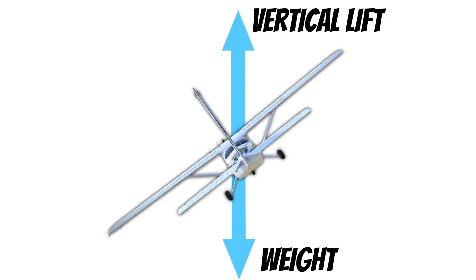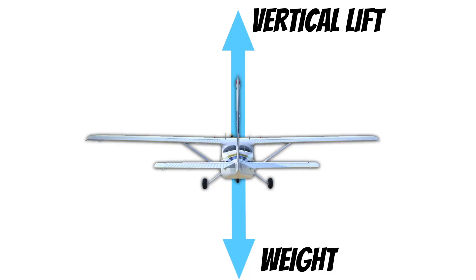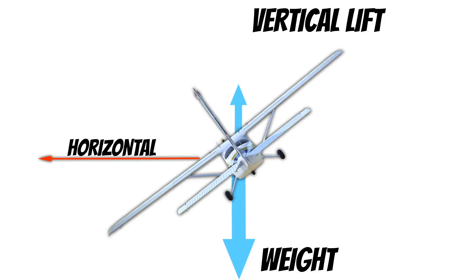But what happens when we turn the airplane by rolling it one way or the other? This causes some of that lift to be pointed sideways instead of straight up — some lift is now moving horizontally, and it's that horizontal component of lift that causes our airplane to turn. But when we convert some vertical lift to horizontal lift, vertical lift decreases. If we don't do something, the airplane will descend because vertical lift and weight are no longer equal.